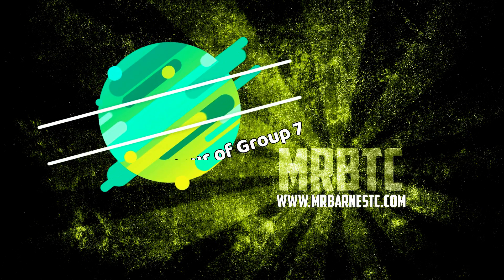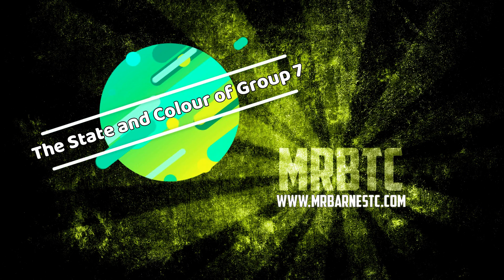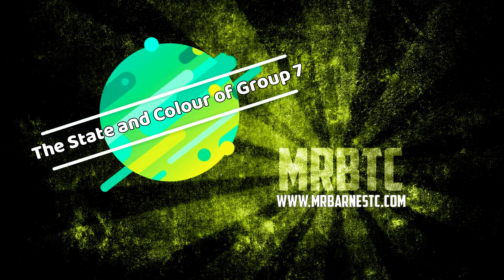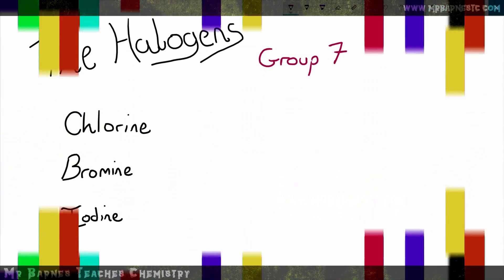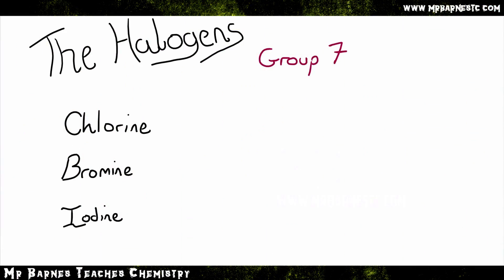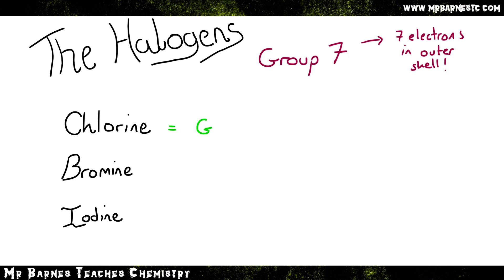Hi guys, welcome to this video looking at the state and colour of the halogens. Starting with a quick recap: halogens are in group seven and all have seven electrons in the outer shell. There are three halogens you need to be familiar with: chlorine, bromine and iodine.